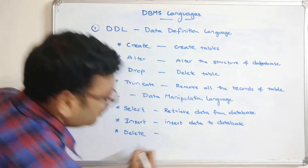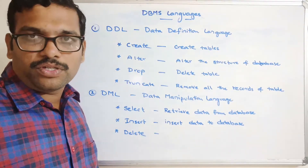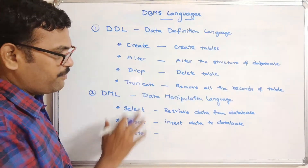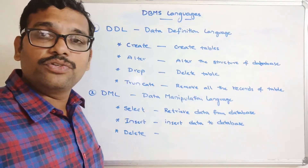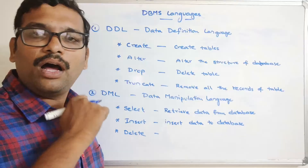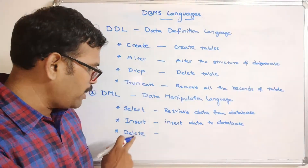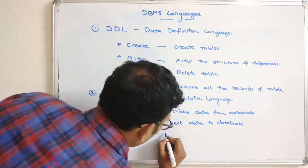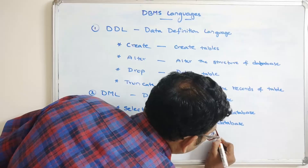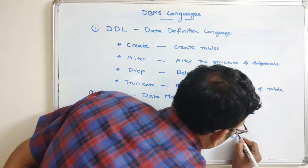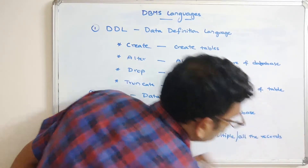The DELETE command is used to delete a single row, multiple rows, or all rows from a table. It differs from TRUNCATE in that DELETE allows you to delete individual or multiple rows based on a condition, whereas TRUNCATE removes all rows at once.